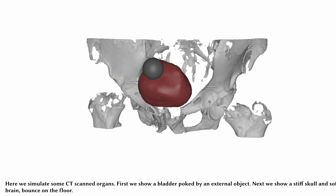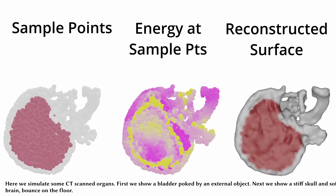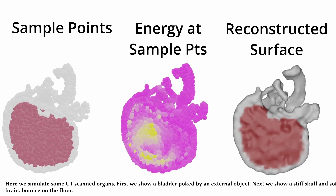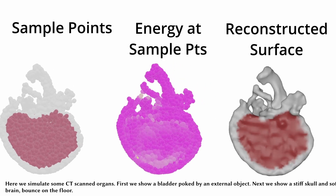Here we simulate some CT scanned organs. First, we show a bladder being poked by an external object. Next, we show a stiff skull and a soft brain bounce on the floor.